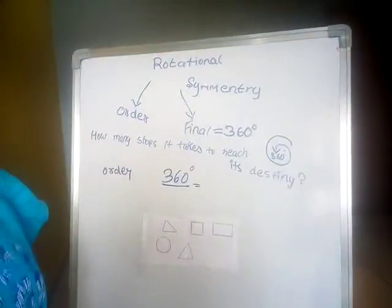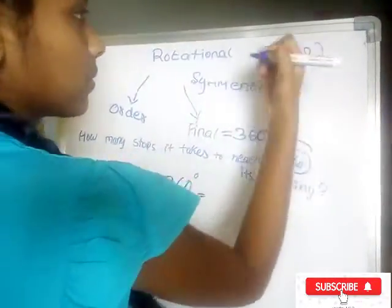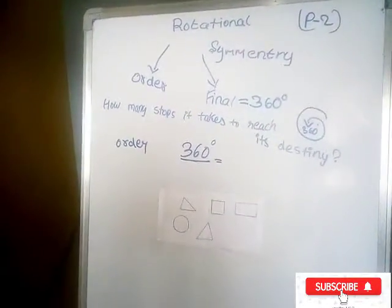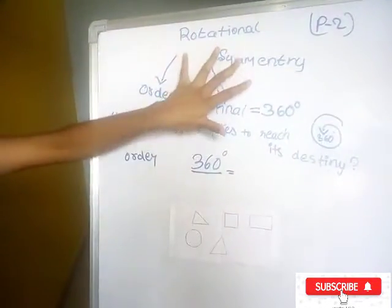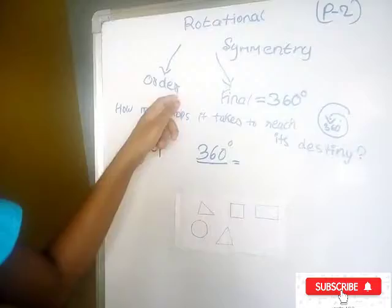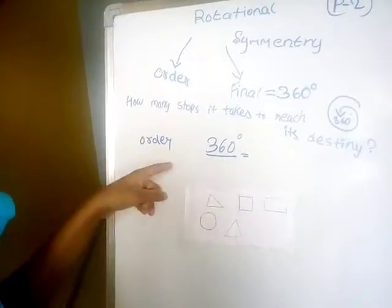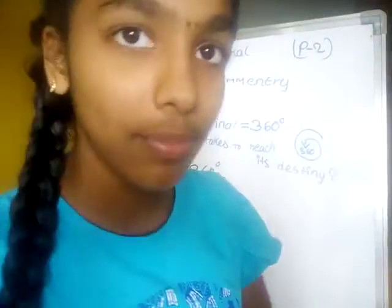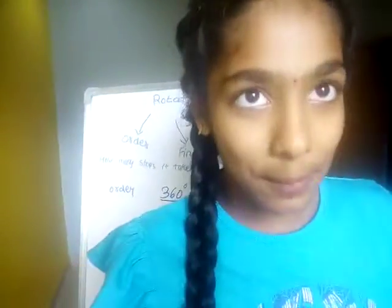Good morning everybody. Today I am telling Rotational Symmetry Part 2. So now in Rotational Symmetry we need to find order and the final is 360 and we need to divide by the order of the shape. Now in this class I will tell some examples.